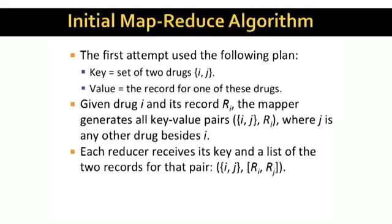And what does a reducer get? Say the reducer is the one for key i, j. This reducer is going to get two key value pairs, one from the mapper for i and the other from the mapper for j.